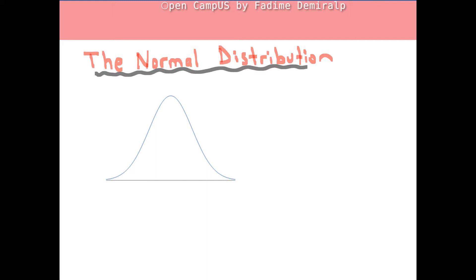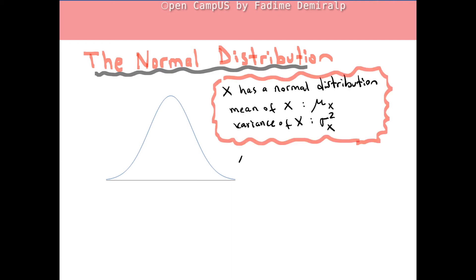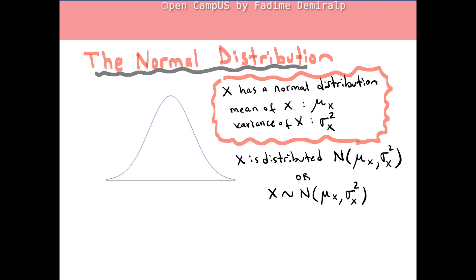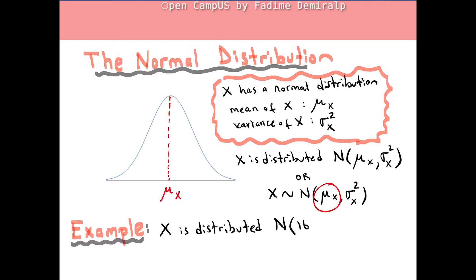Let's start with the notation. Suppose a random variable X has a normal distribution whose mean is mu_x and variance is sigma-squared_x. X has a bell-shaped density function and mu is the center of the distribution. For example, if X is distributed normally with mean 16 and variance 25, we'll have 16 at the center.